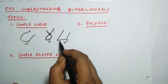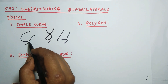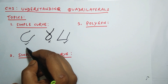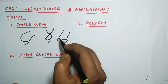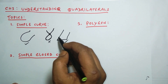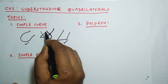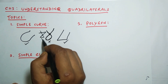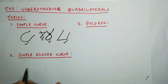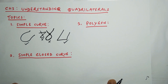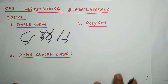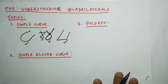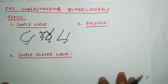A simple curve may be made of line segments or it may be made of curved lines, but the important thing is that it should not cross anywhere. Look at this curve — it has crossed at two points, so this is not a simple curve. It should nowhere intersect.